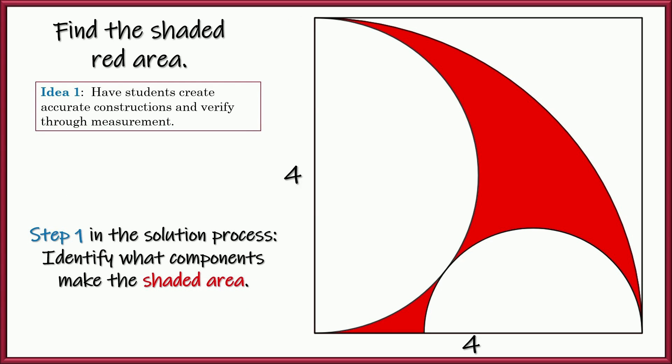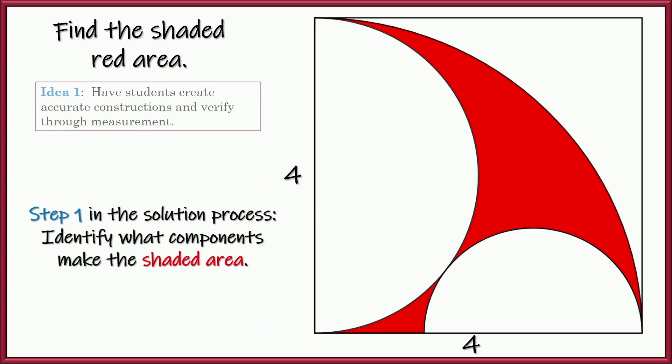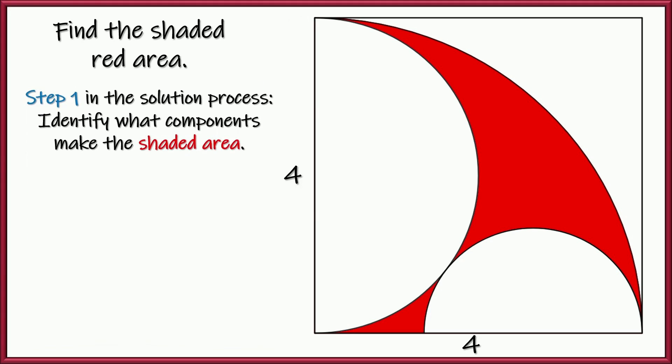First thing we're going to do when we solve a question like this is always identify the components. And that first idea would really help students to see stuff like this. So they would recognize that if we had the quarter circle and we subtracted the two semicircles, then what's left is the area that's shaded in red.